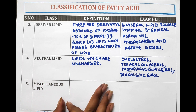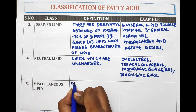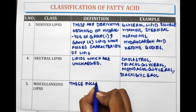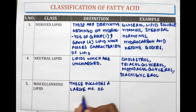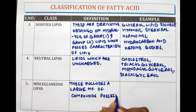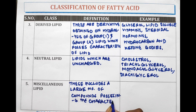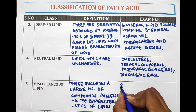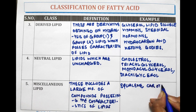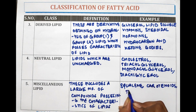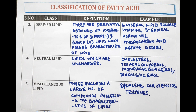Miscellaneous Lipids include a large number of compounds possessing the characteristics of lipids. Examples are Squalene, Carotenoids, and Terpenes. That's all for today.